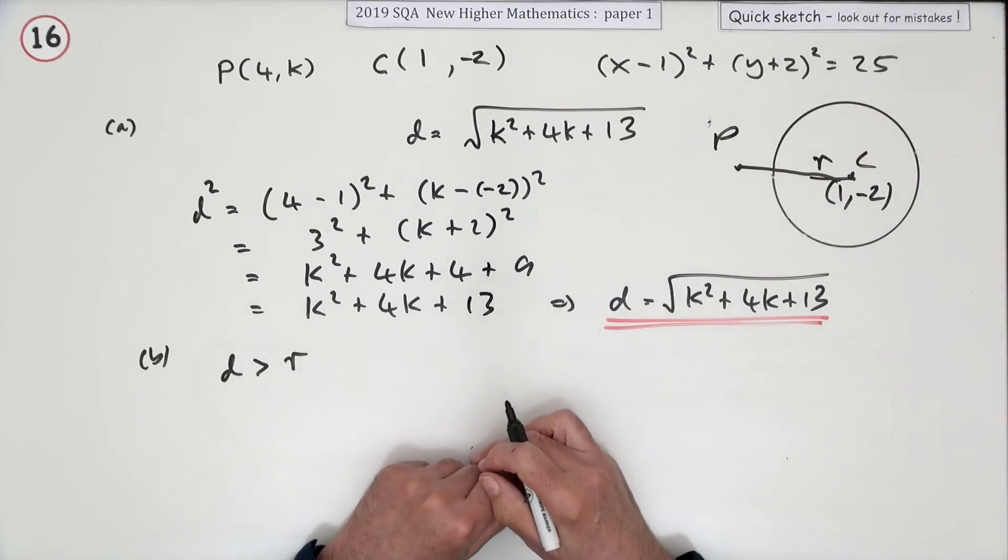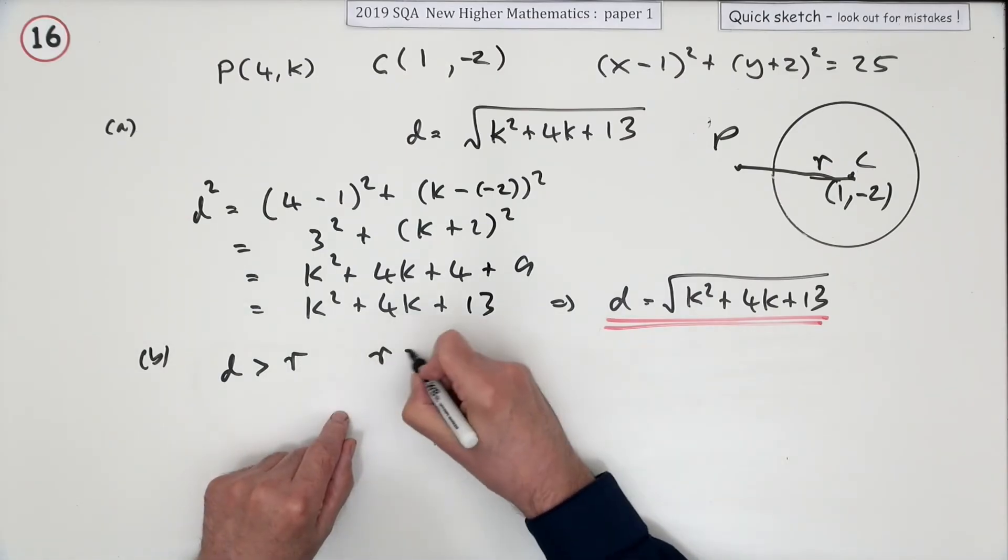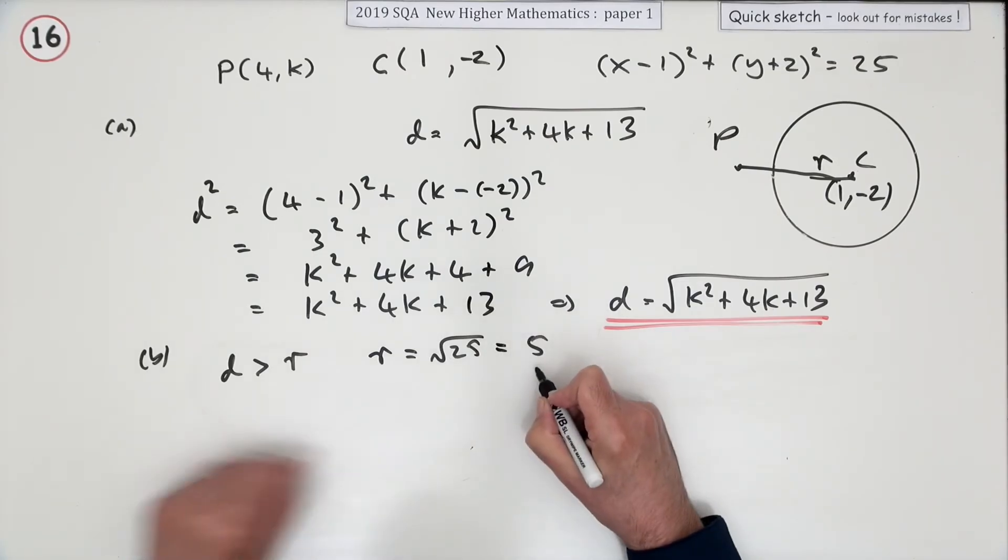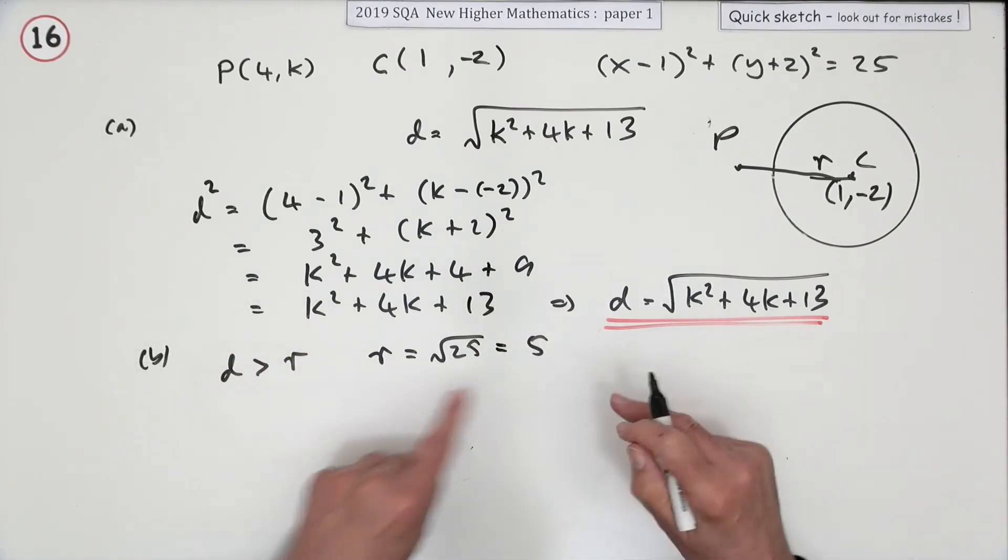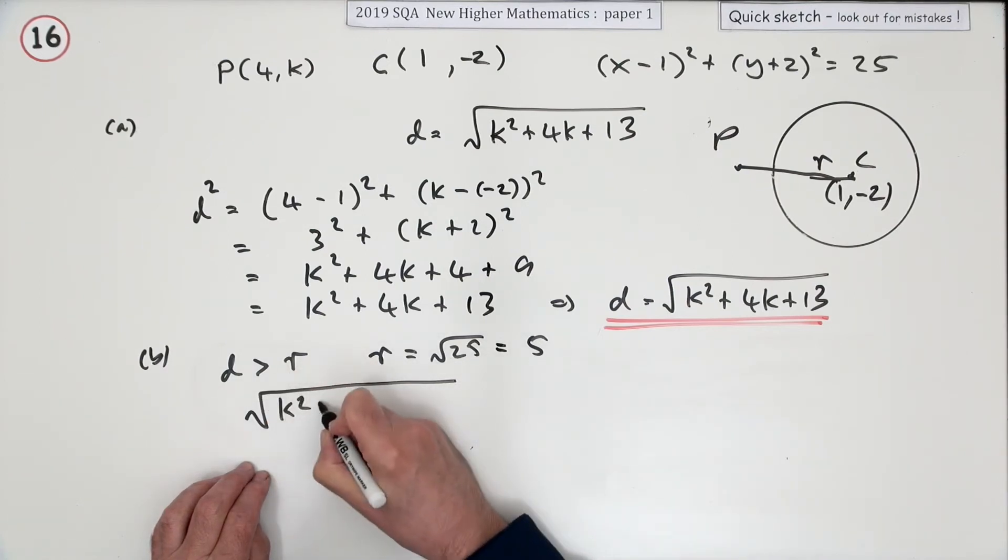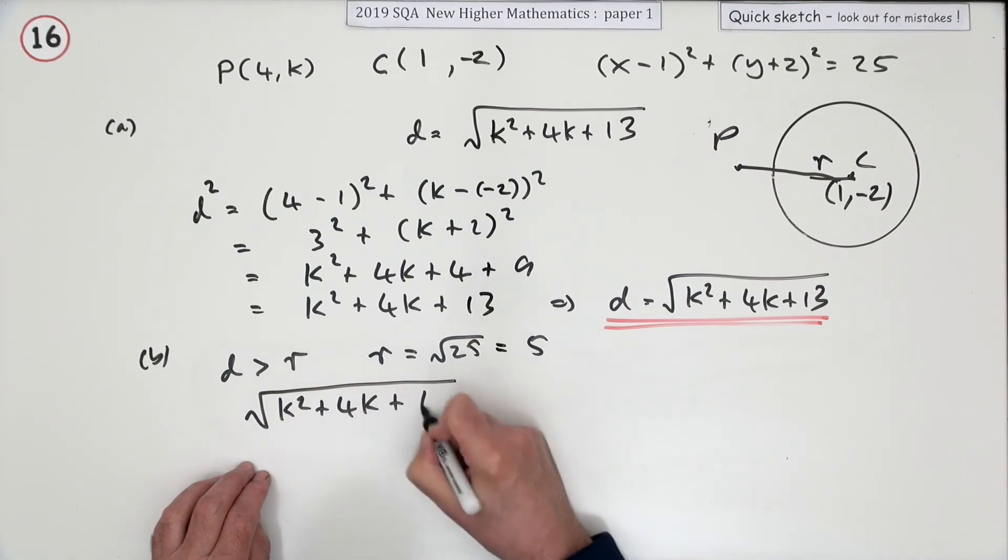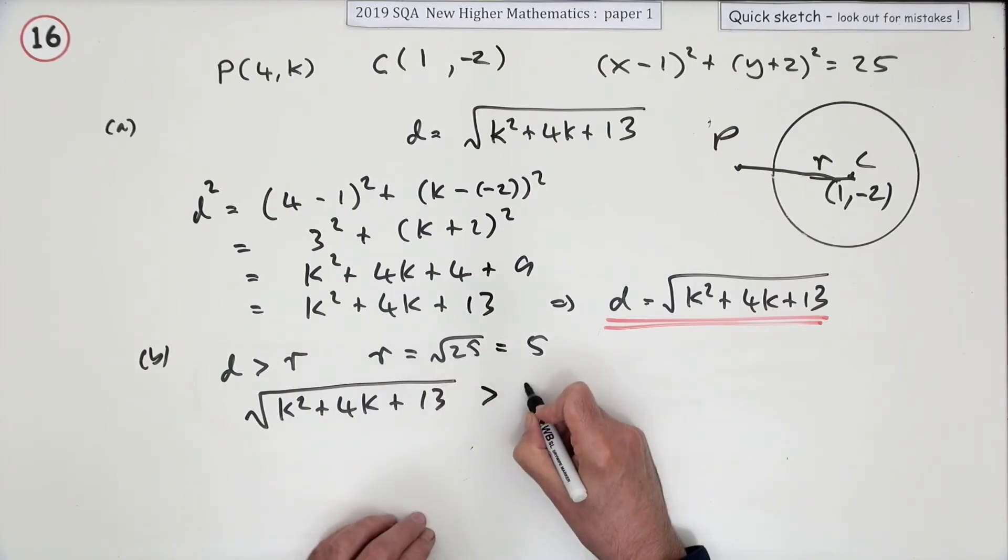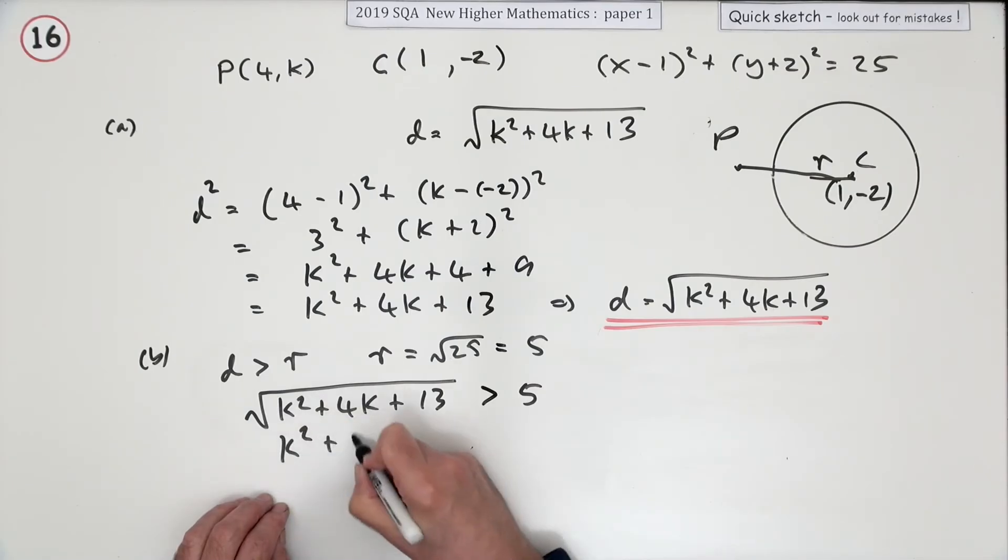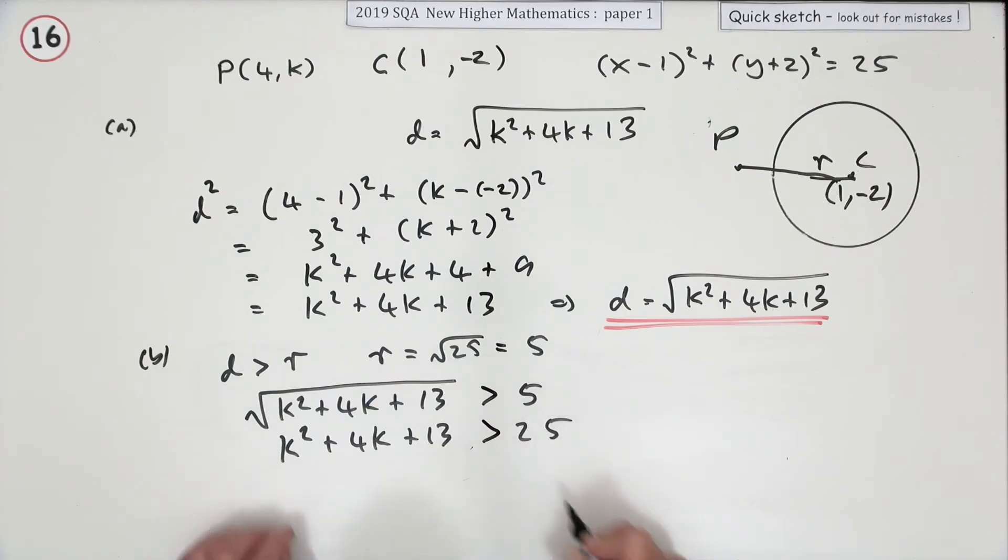There, it's the square root of 25. r equals the square root of 25, which is 5. So the distance has to be greater than that. So I'll just put this down: K squared plus 4K plus 13 has to be greater than 5. Get rid of the square roots, square both sides—that's greater than 25.